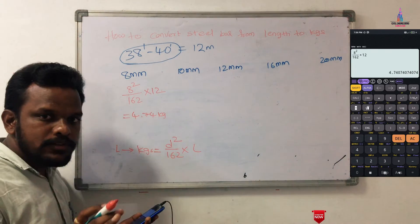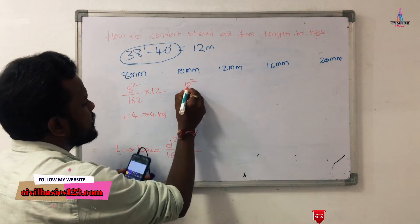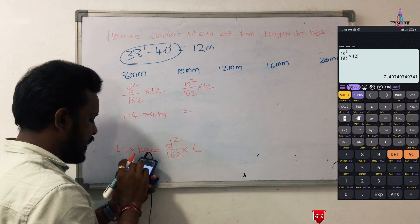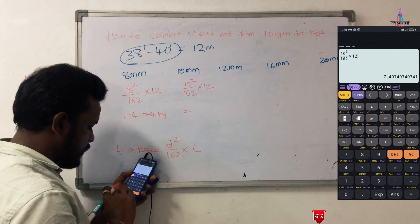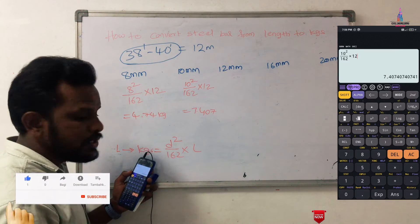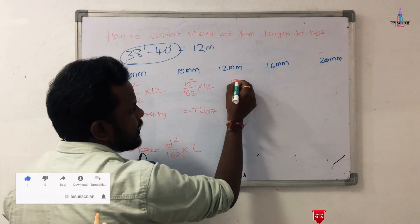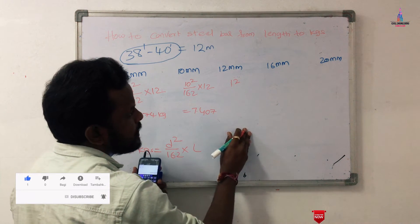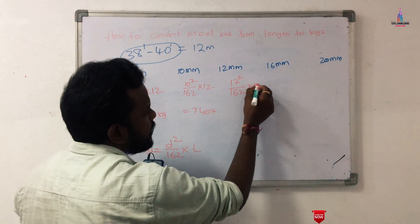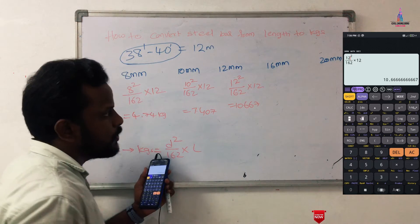For a 10 mm diameter bar: 10² ÷ 162 × 12, which is approximately equal to 7.407 kg. So one 12-meter bar of 10 mm diameter weighs approximately 7.407 kg. For a 12 mm diameter bar, the calculation is 12² ÷ 162 × 12, which is approximately equal to 10.667 kg.